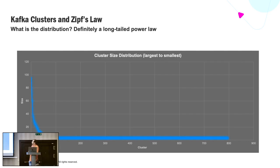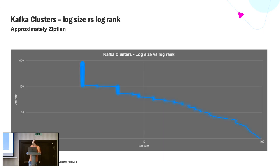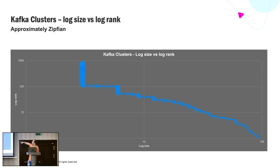Kafka clusters and Zipf's Law — this is the actual distribution of all our Kafka clusters. You can see it's definitely a long tail power law: a few clusters are very big, and the majority with the long tail are very small. As soon as we graph the log versus the log of size and rank, it's sort of a straight line. It's a bit messy with this particular data set because there are a lot of size-three clusters — that's the big blob at the top left-hand corner.